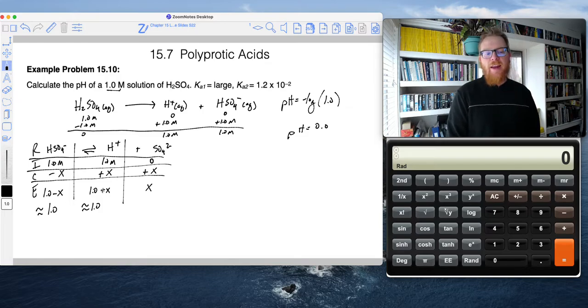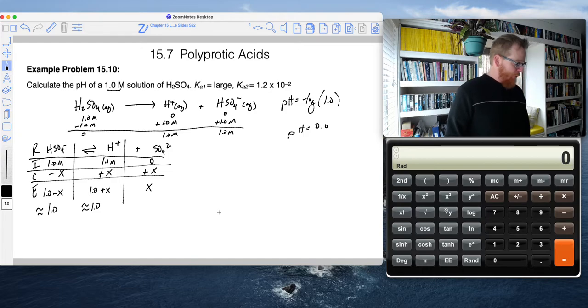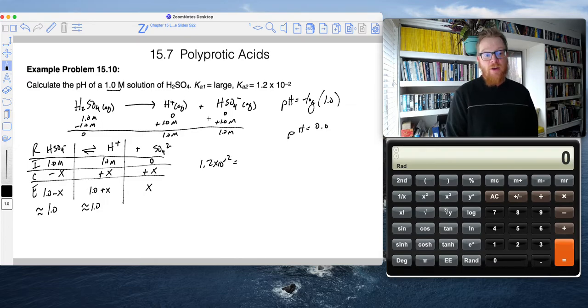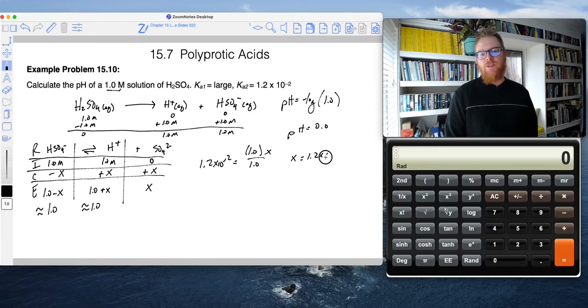So now what if we went ahead and just solved for X anyways, using our typical 5% rule. Well, that's going to be the Ka value 1.2 times 10-2. And that's going to equal the equilibrium expression H+ times sulfate divided by bisulfate. So that's really just going to be quite simple. That's going to be 1.0 times X divided by 1.0. So we know quite simply that X is 1.2 times 10-2.